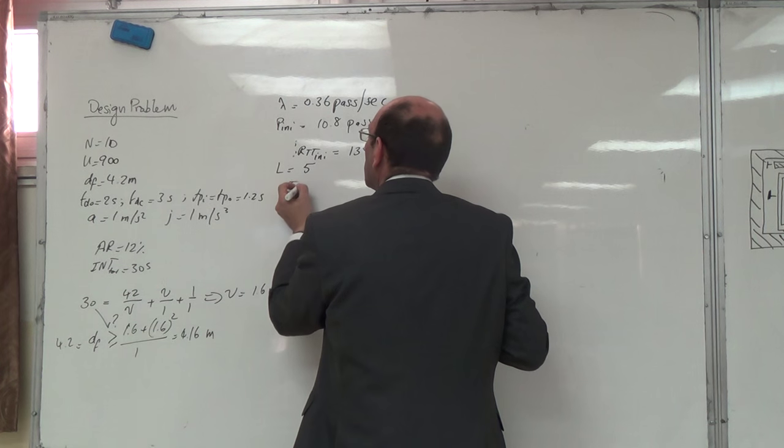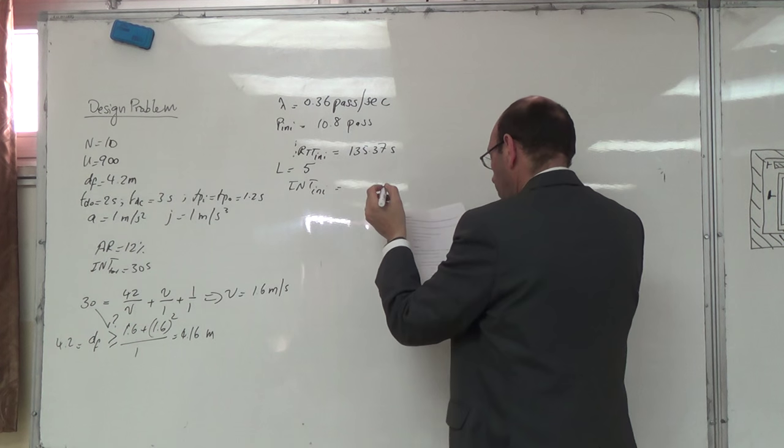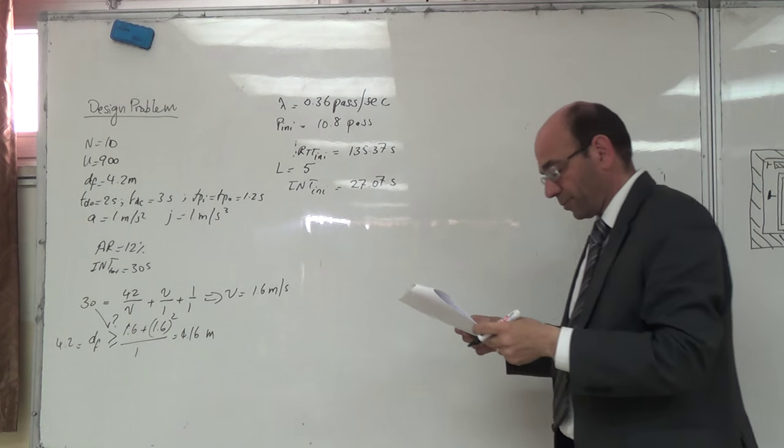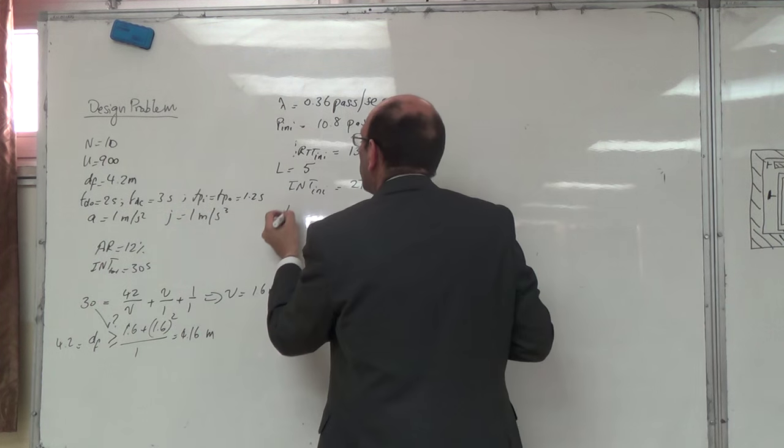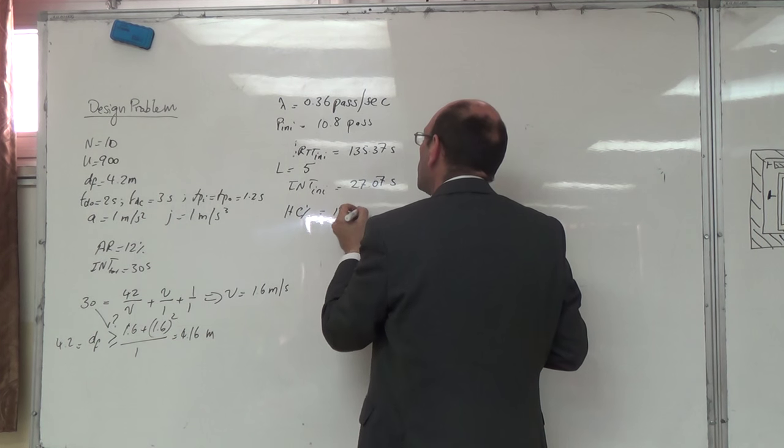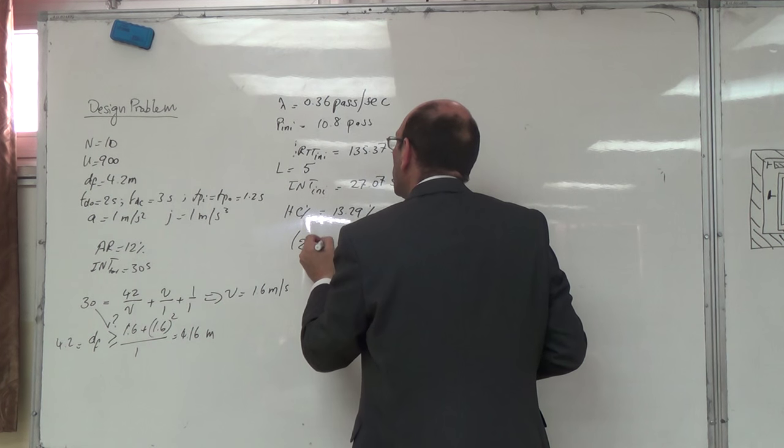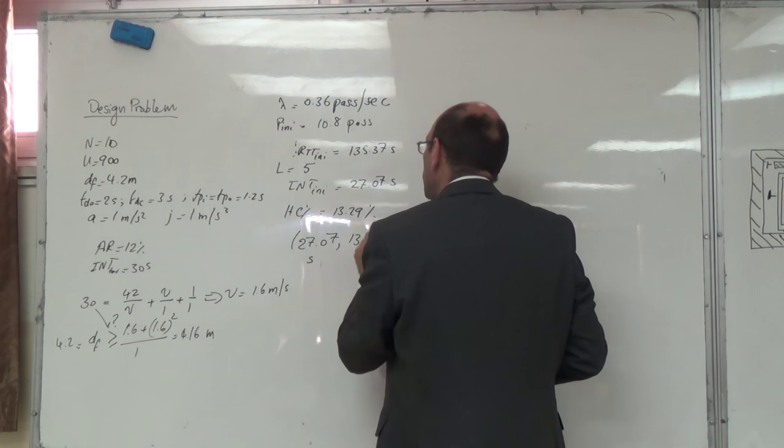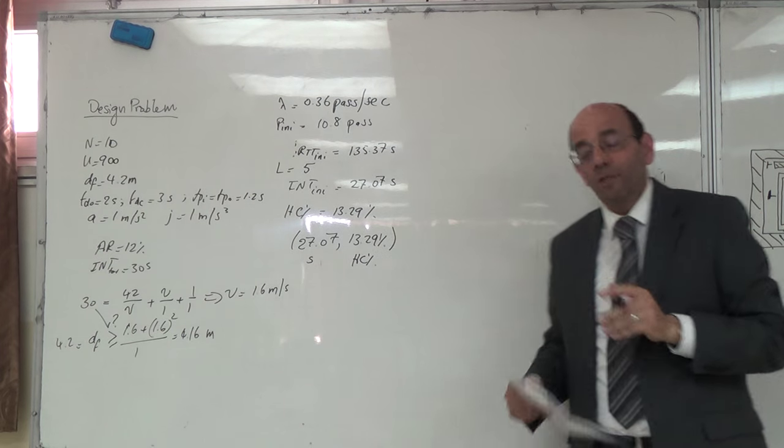وبطلع معي interval actual أو interval initial بساوي 27.07 seconds. بتطلع معي الهاردين كباسي الفعلية بتطلع 13.29%. إذا اول نقطع الهاردين راح تكون 27.07 seconds و 13.29% handling capacity as a percentage of the building population.